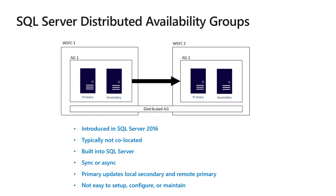If you've not seen distributed availability groups: the concept introduced in SQL 2016 was that you've got an AG and you'd like to set up another AG in a distributed site, probably not co-located with you. You can set up an asynchronous process between the AGs and distribute changes for disaster recovery. It's built into SQL Server through T-SQL commands and can be sync or async — but most customers use async since the other AG is not co-located. This is not auto-failover; it's manual failover, a DR site. The secondary also has its own AG, so you can use it for read replica scenarios. The last bullet point, though — it's fair to criticize us: it's not easy to set up, configure, or maintain.